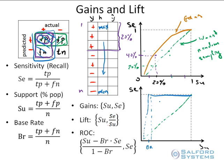Unlike the ROC curve which occupies the entire unit square, the best gains curve is always controlled by the base rate. If you have a population where the base rate is very high, your optimal gains curve will actually be very close to the 45-degree line. The actual gains curve from your model will be squished somewhere in between. This is one of the inconveniences to always remember about the gains curve.